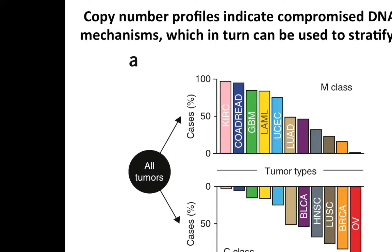Copy number profiles usually occur through a compromised DNA repair pathway. In high-grade serous ovarian cancer, for example, it's homologous recombination that repairs double-strand breaks in the genome on cell division. Usually through disruption of BRCA1 or BRCA2 — either through germline, somatic, or methylation — those cells have compromised ability to repair double-strand breaks, and so copy number changes accumulate to the point where you get the spectrocarograms I showed you earlier.